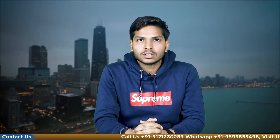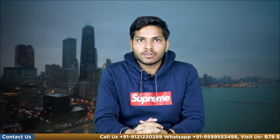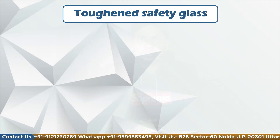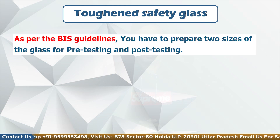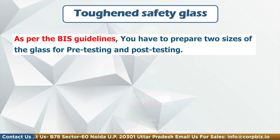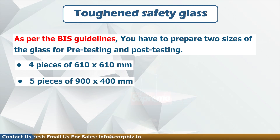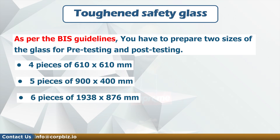Regarding the sampling plan for toughened safety glass, as per BIS guidelines, you have to prepare three sizes of glass for pre-testing and post-testing: four pieces of 610x610 mm, five pieces of 1900x400 mm, and six pieces of 1938x876 mm.